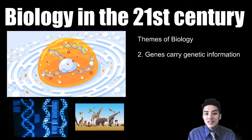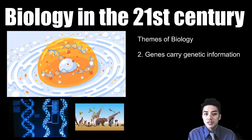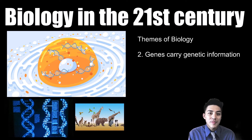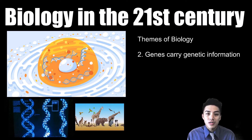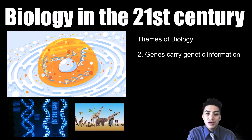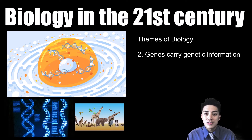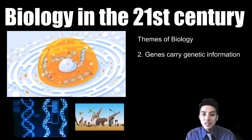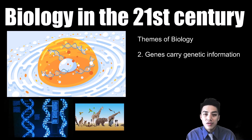The second theme of biology: genes carry genetic information. Parents pass on these genes to their offspring, and eventually these genes allow the offspring to express certain traits and characteristics and adaptations that allow them to survive in the wild.